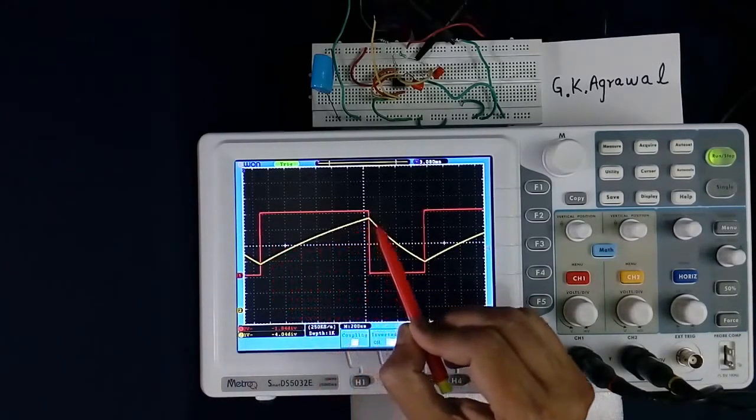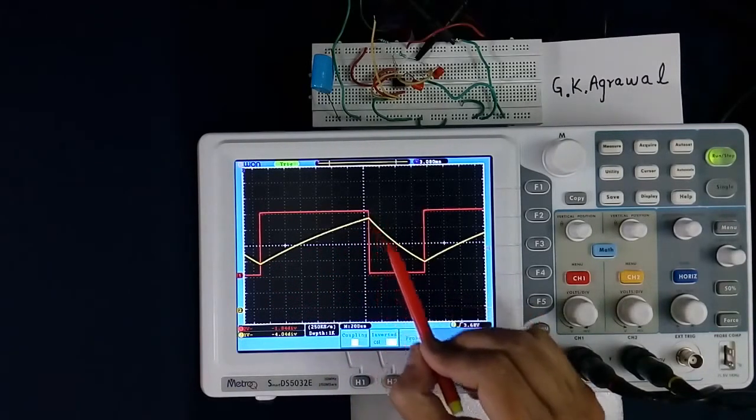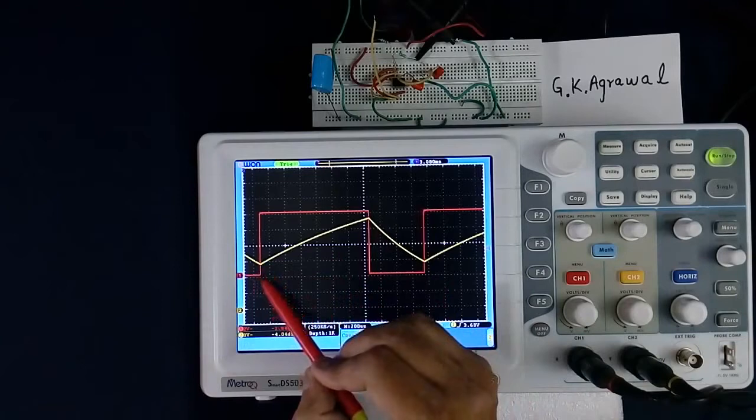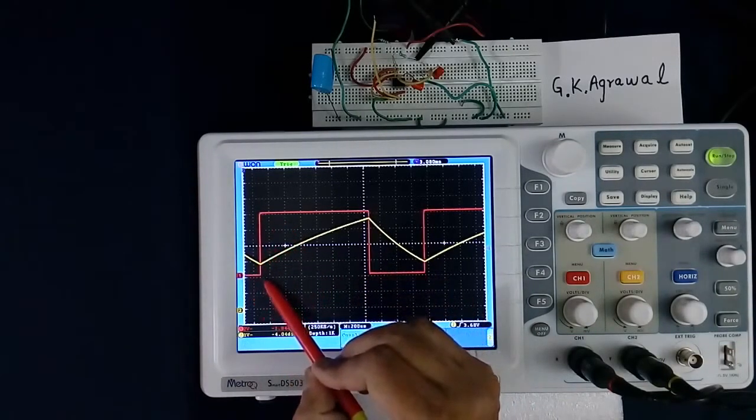Immediately charging will start. When this signal goes from high to low, immediately discharging will start. So this is charging, this is discharging. And this always happens whenever this channel 1 signal is changing.